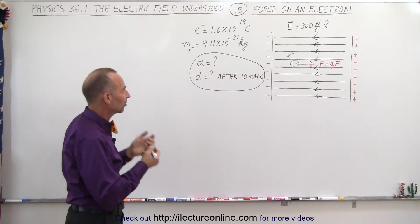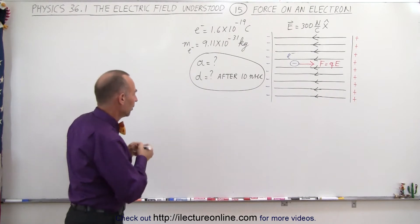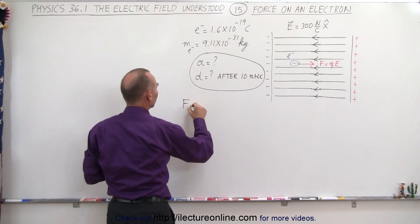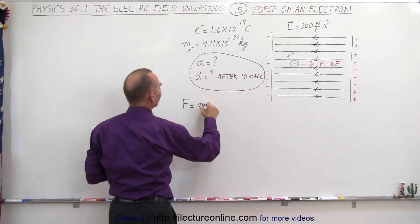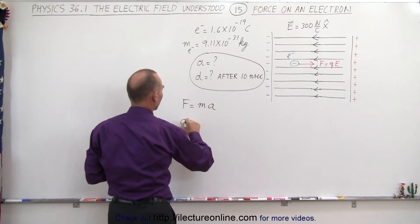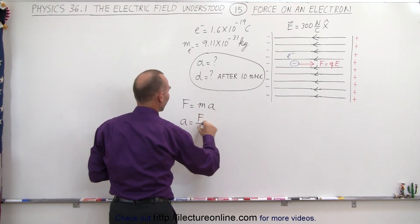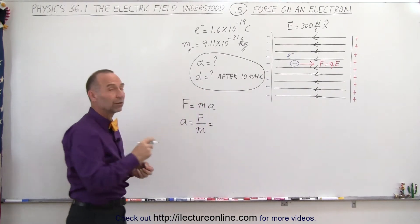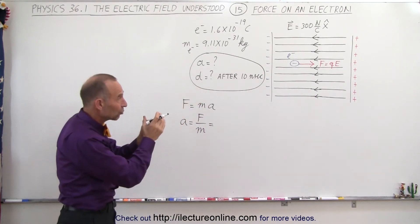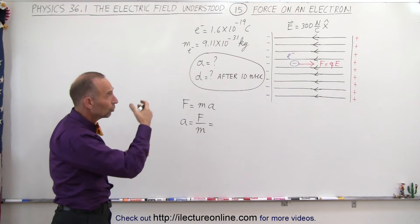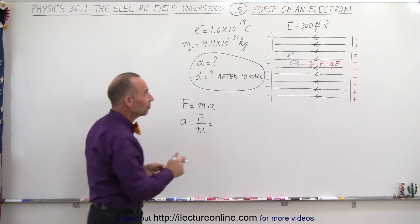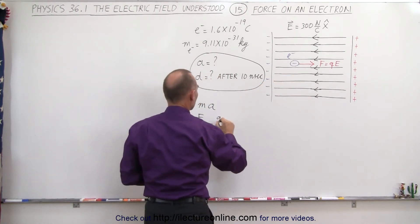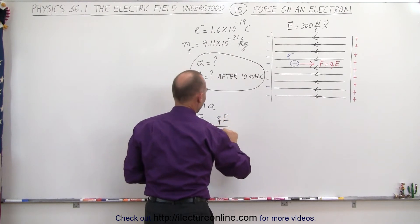So first let's start with acceleration. To find the acceleration, we use Newton's second law, which tells us that force equals mass times acceleration, so the acceleration is equal to the force divided by the mass. In this case, the force will be the force experienced by the electron due to the presence of the electric field, which is equal to q times E. So the acceleration will be q times E divided by the mass.